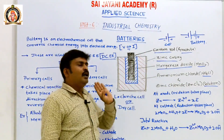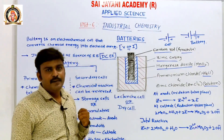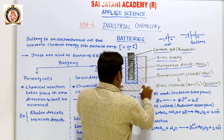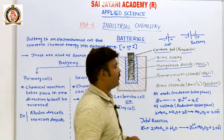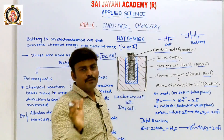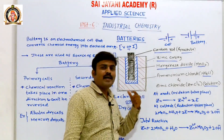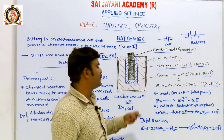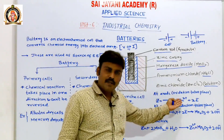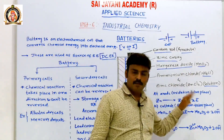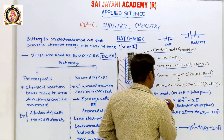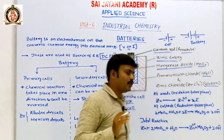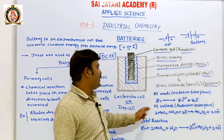The working principle of the dry cell: the pastes form the anode and the carbon rod forms the cathode. At the anode, oxidation takes place — meaning liberation of electrons. Zinc is converted: Zn → Zn²⁺ + 2e⁻. At the cathode, reduction takes place.